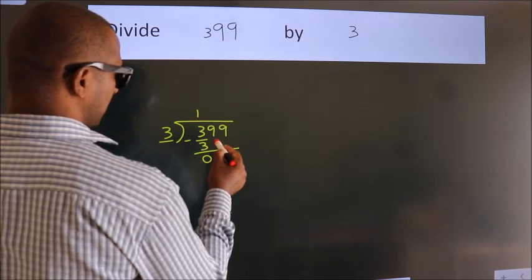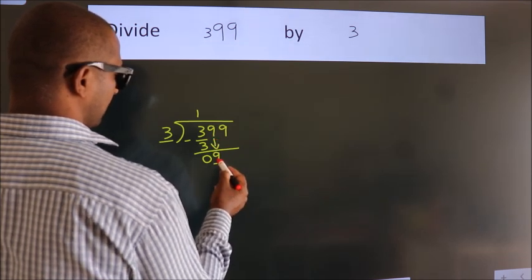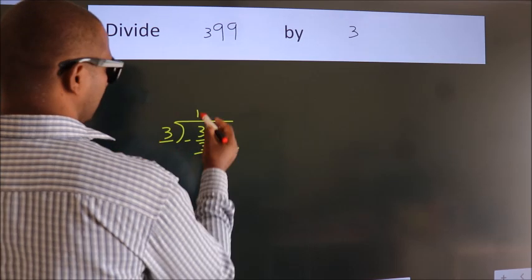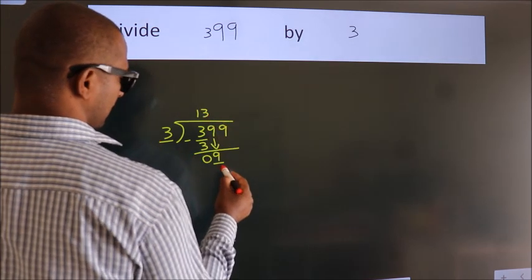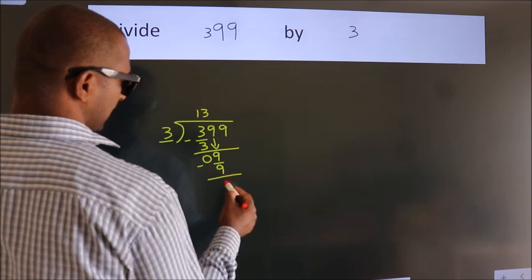After this, bring down the beside number. So 9 down. So 9. When do we get 9? In 3 table, 3 3s 9. Now we subtract. We get 0.